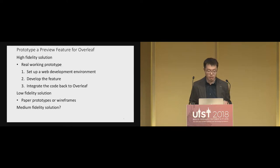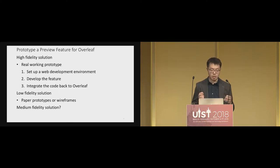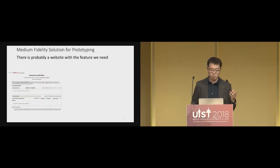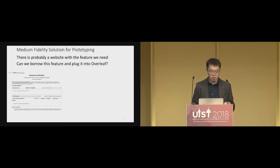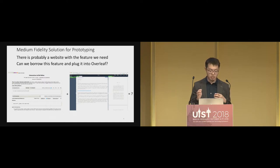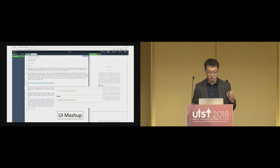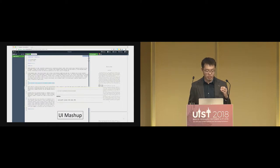This is how we start thinking about doing something in the middle — relatively easy to make, but with some degree of interaction. Somewhere on the web, there should be a website that can do what we need: take a line of LaTeX equation code and render it. So we're thinking, can we borrow this feature and just plug it into Overleaf, making it part of the system? We create the term UI mashup for such a thing.